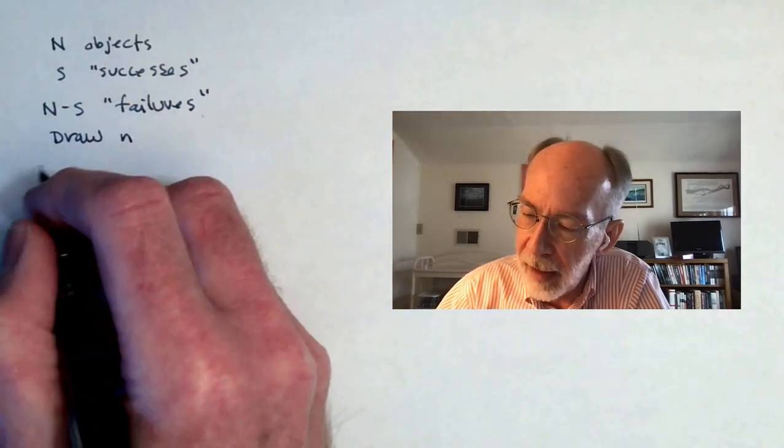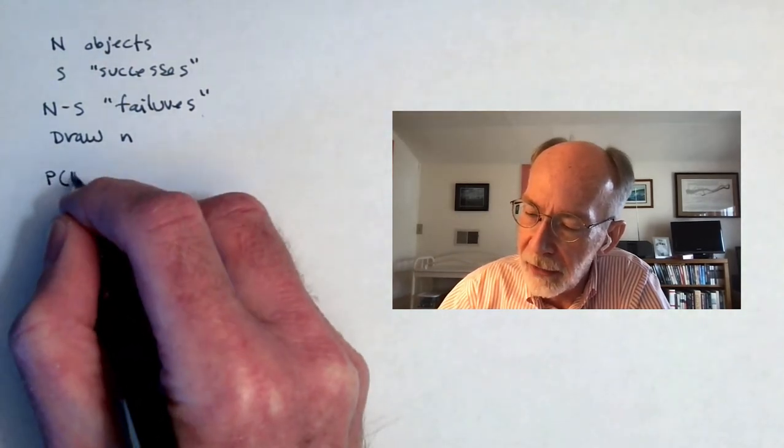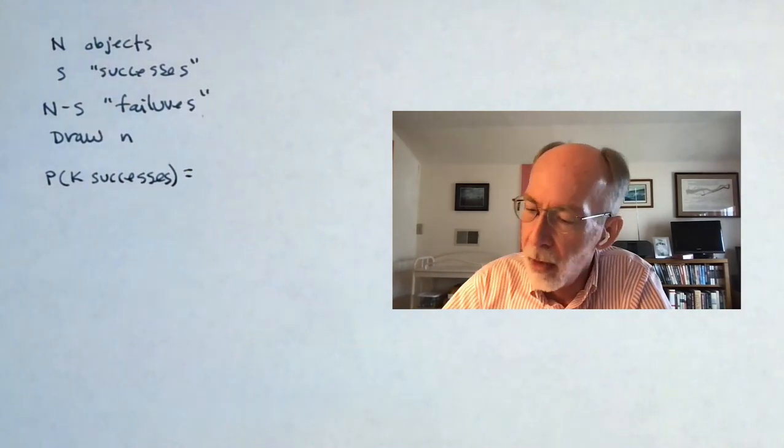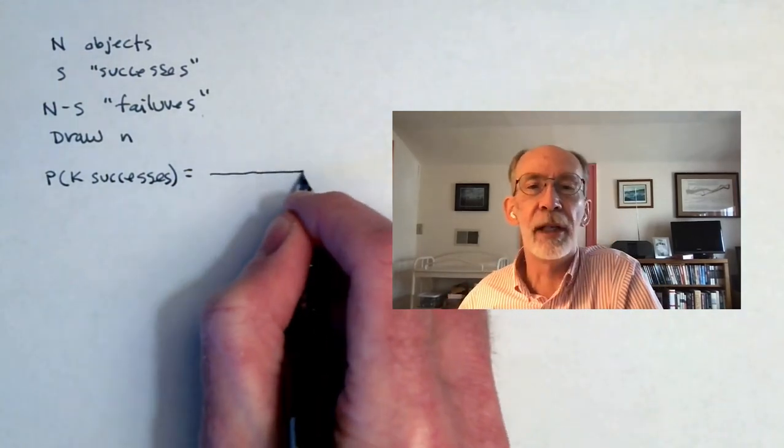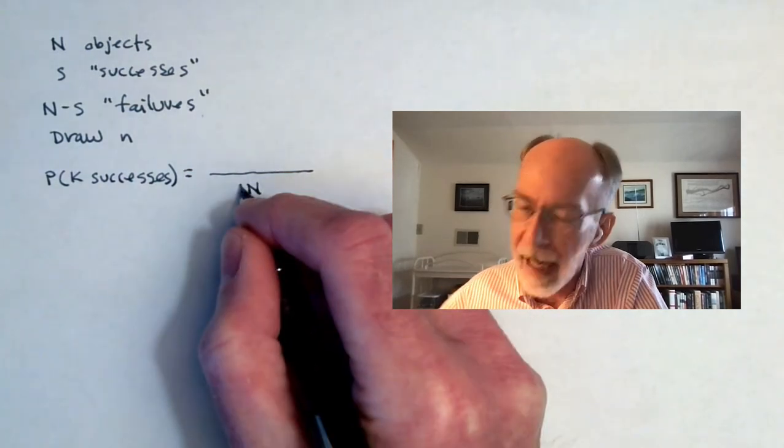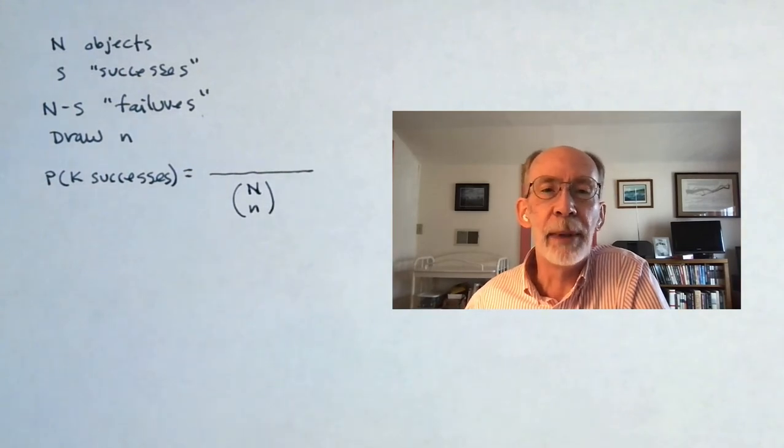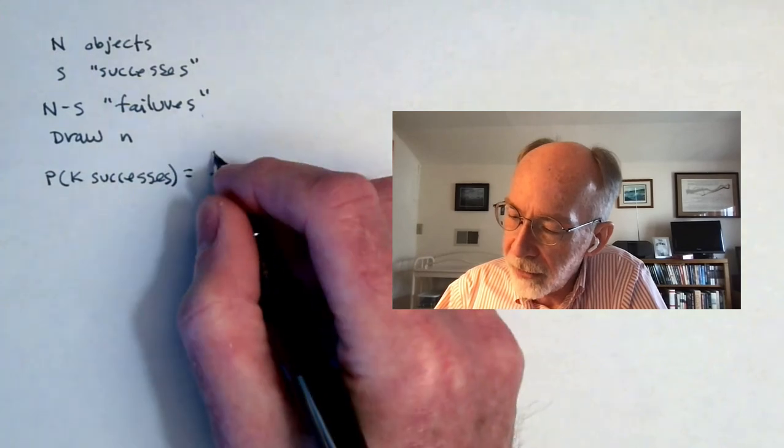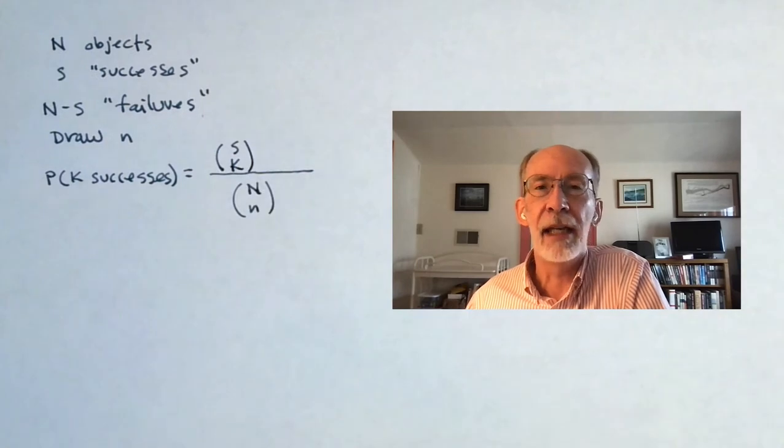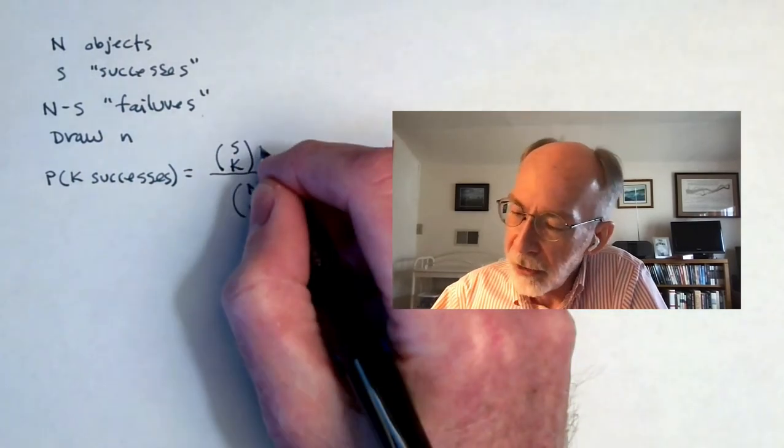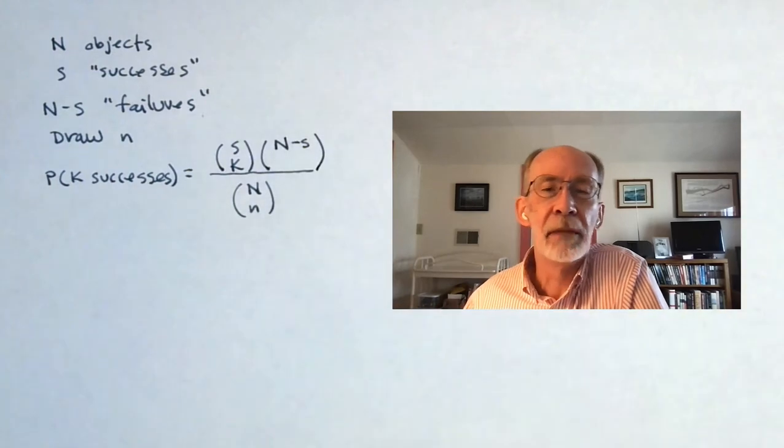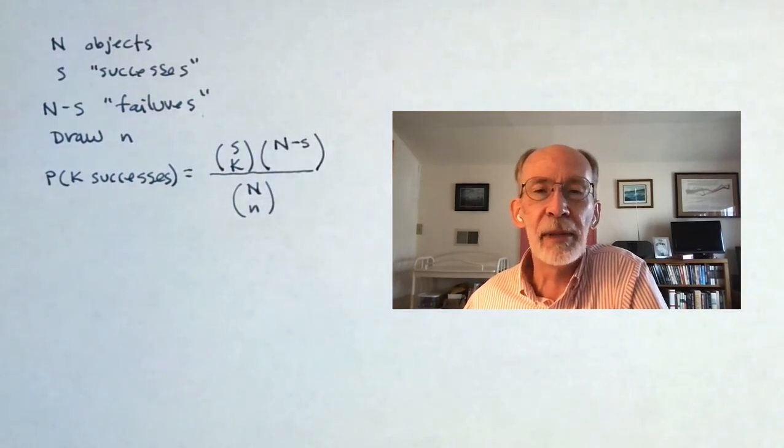And let's imagine that we're going to draw little n of these objects without replacement. And we're going to ask the question, what is the probability that K of them will be successes that will have the feature of interest? Well, what is our denominator? It's the number of ways we can reach into a set of big N objects and retrieve little n of them. How many ways can we get K of them to be successes? Well, there are S successes floating around in the original set. Should be S choose K ways of getting K successes. How many failures are there? There are big N minus S.